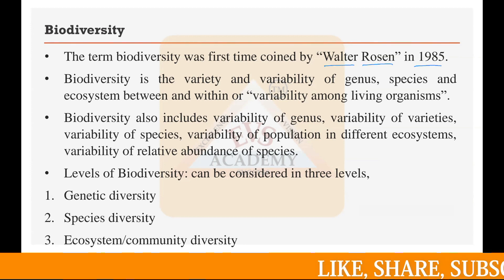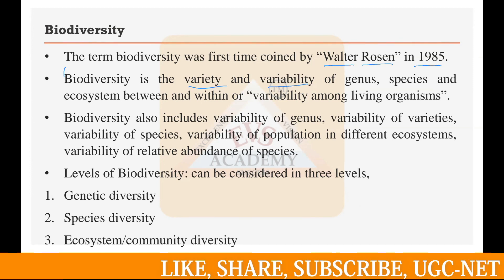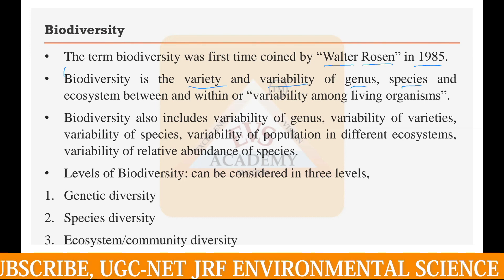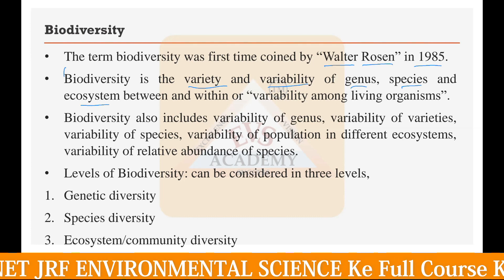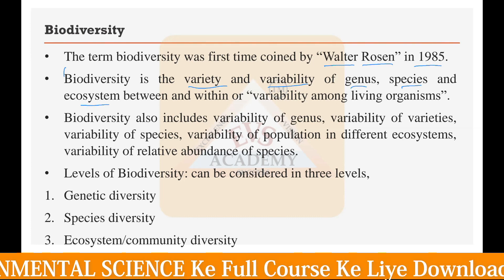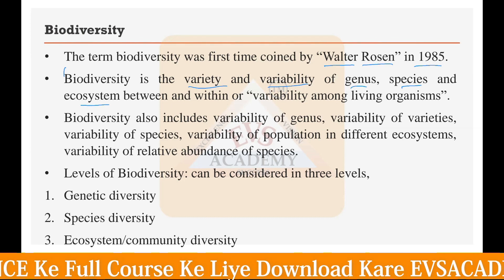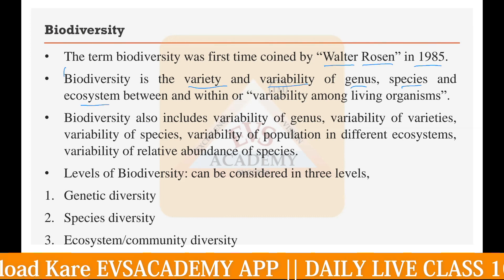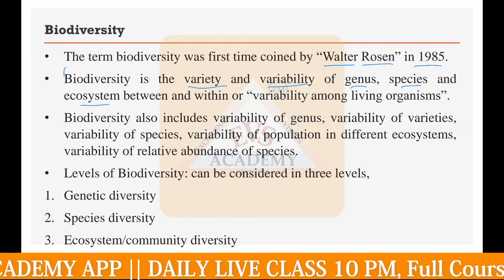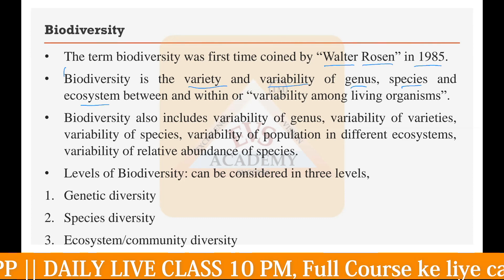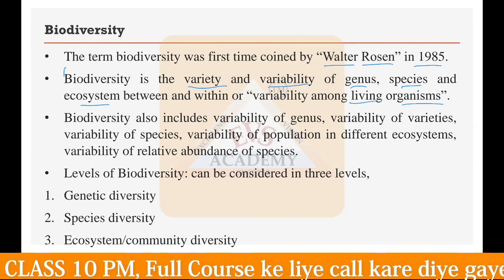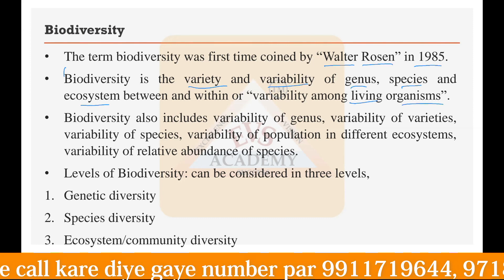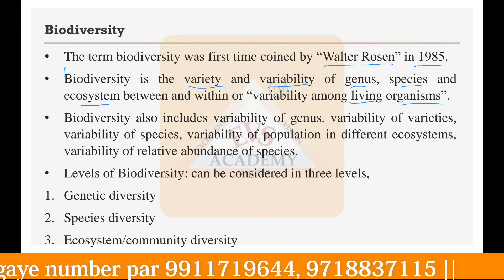The definition of biodiversity is the variety and variability of genus. It means the different genus of organisms, different species of organisms, or maybe different types of ecosystems — like water ecosystem, aquatic ecosystem, desert ecosystem, or terrestrial ecosystem. More number of ecosystems also means higher biodiversity, found between and within living organisms. Higher the variability of living organisms and more number of species — you can say the biodiversity of that particular area is very high.